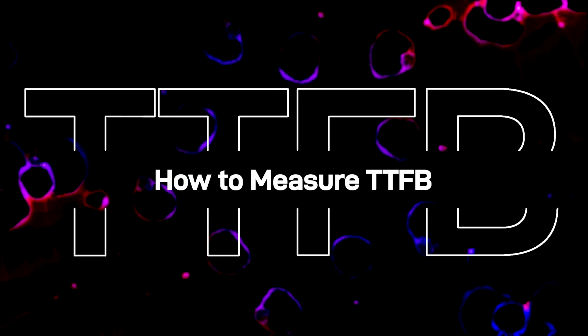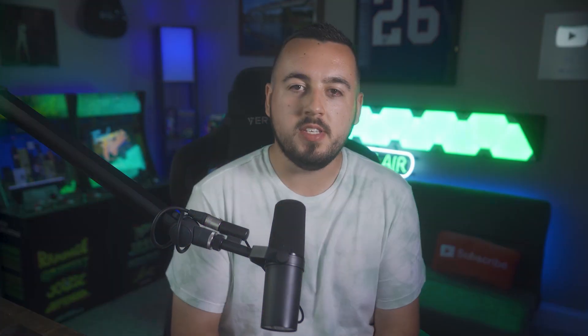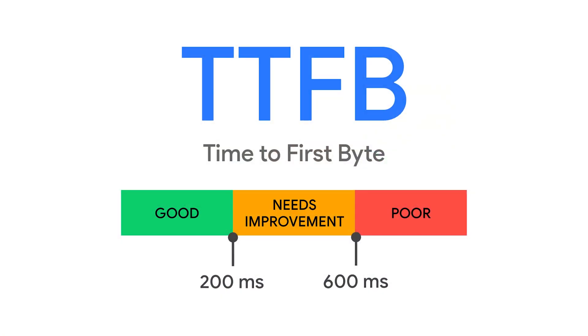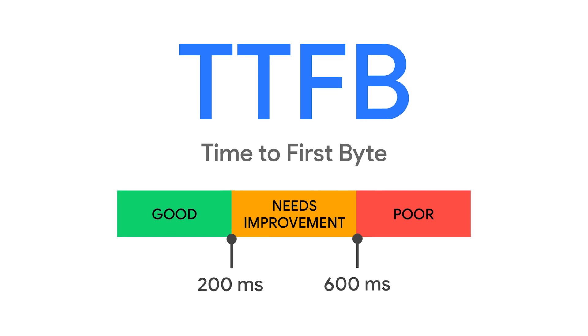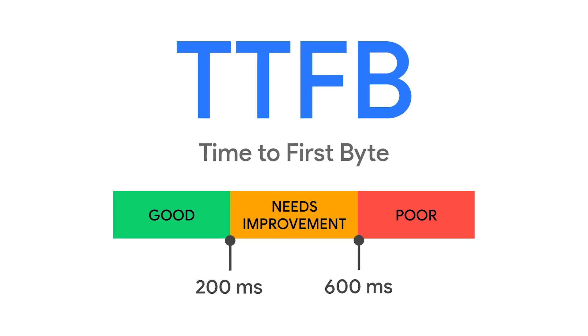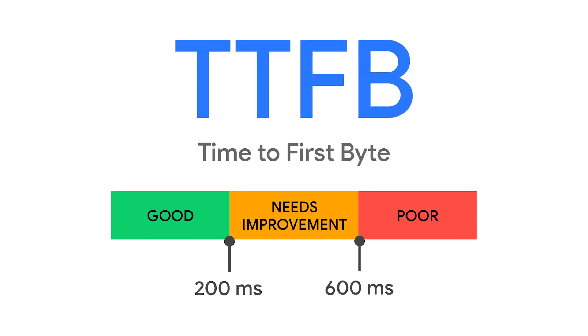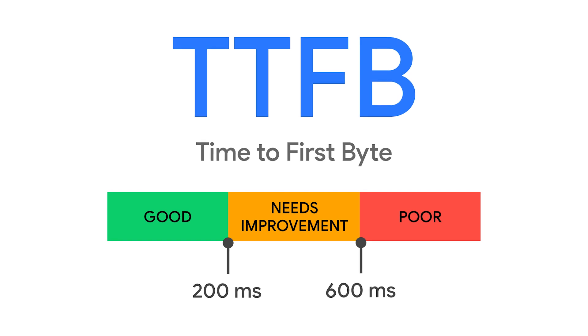How to measure TTFB. Typically, a favorable TTFB falls somewhere between 200 and 500 milliseconds. Of course, the lower the number, the better. Anything above 600 is considered a poor score.